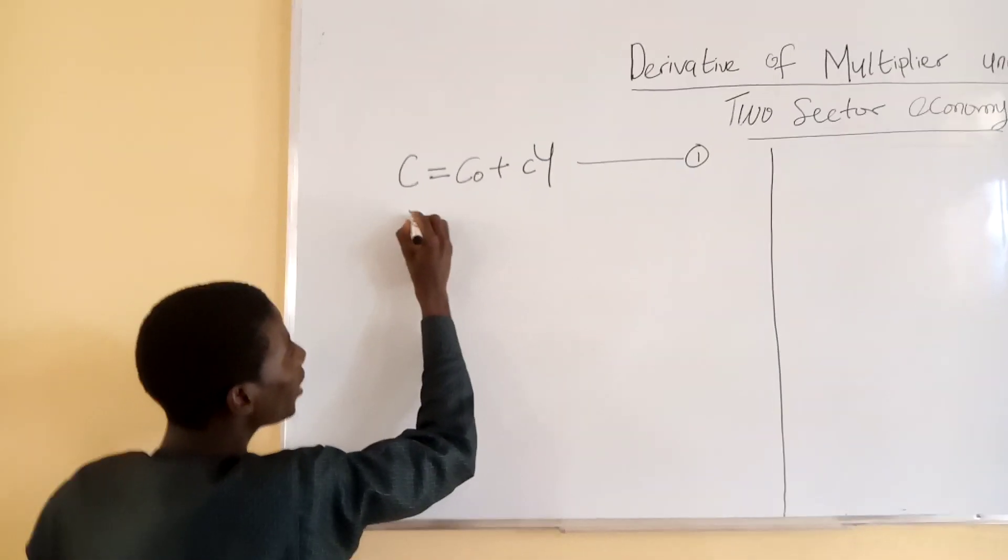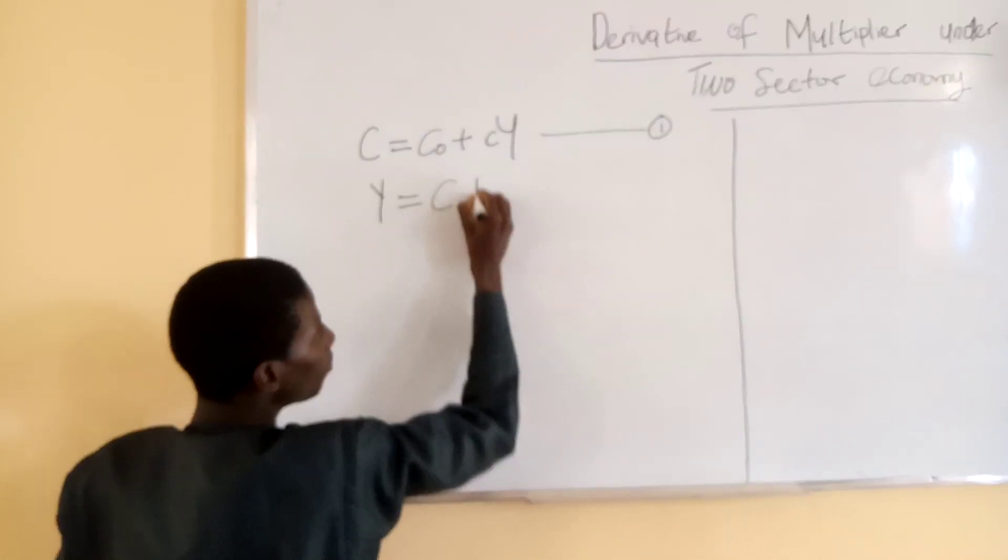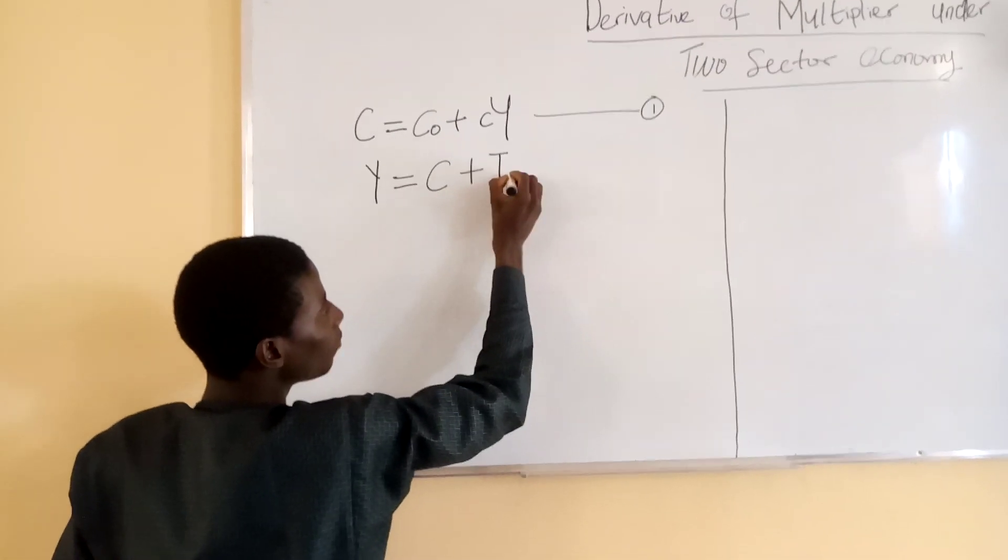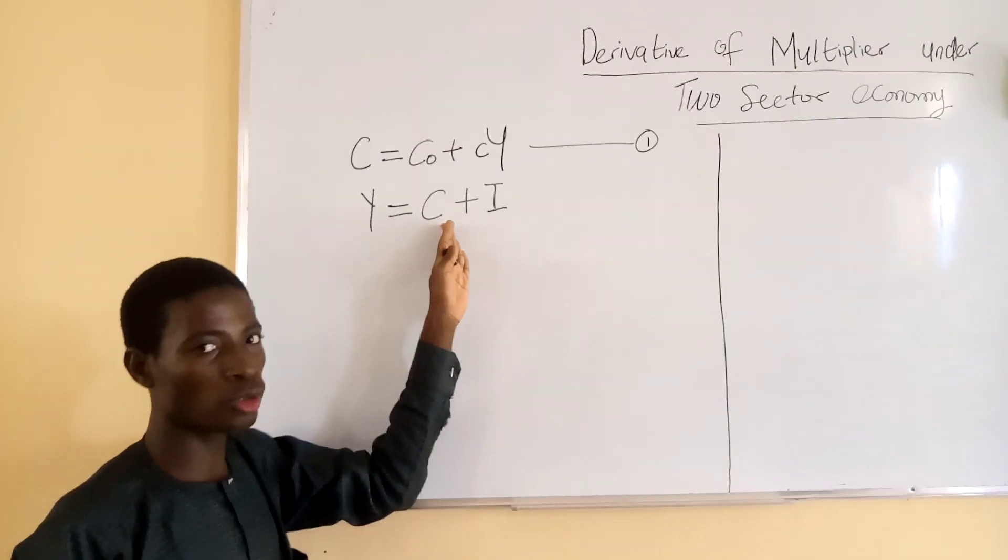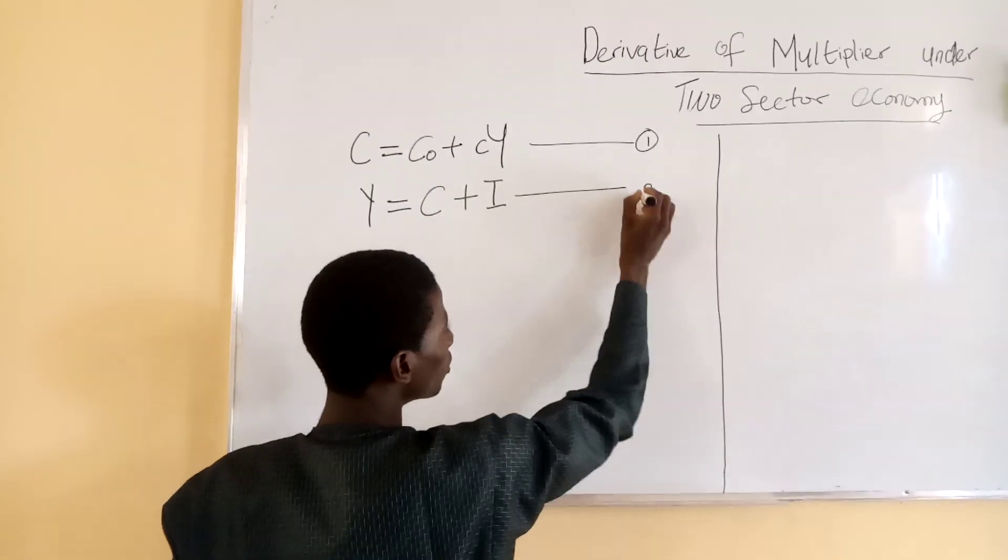Another function of our income itself is Y equals C plus I, which is investment. This is a function for two-sector economics. We can call this equation two.